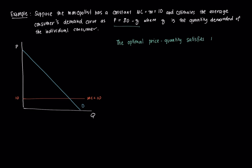Plugging in, we have P equal to 80 minus Q equal to the marginal cost of 10. Solving for Q, we get Q* equal to 70 — that's the amount each consumer will buy. The price charged is then P equal to 80 minus 70, so P* equals 10. Therefore, the optimal per-unit price is equal to 10, which satisfies the condition P equal to MC.